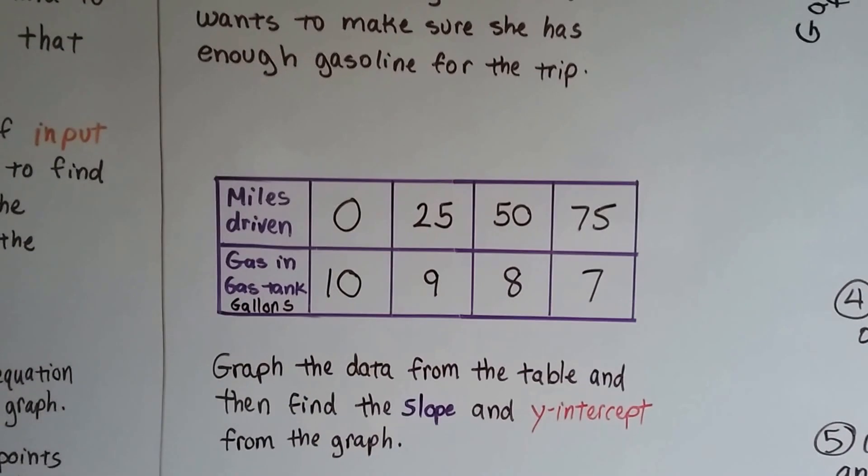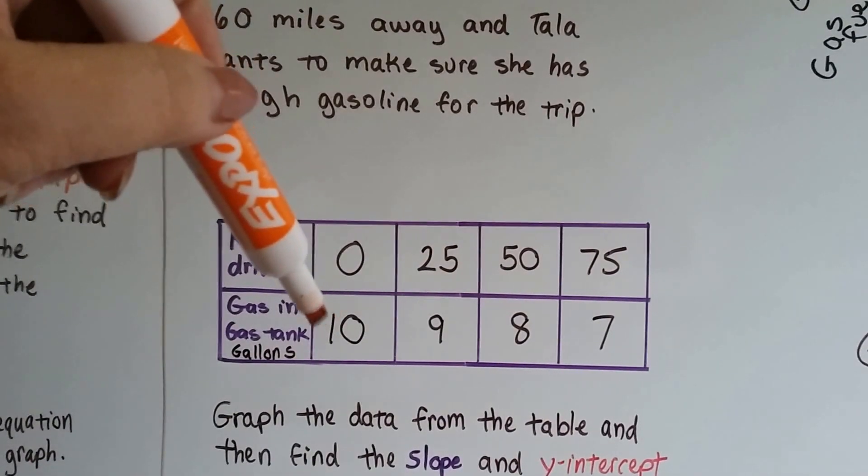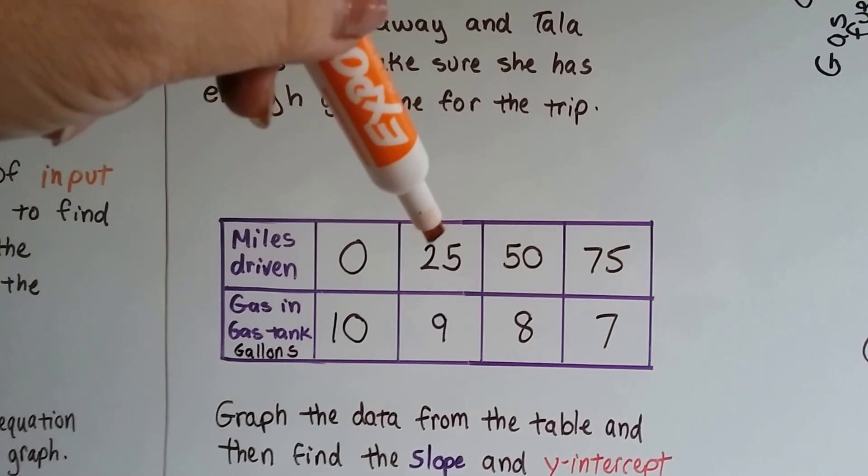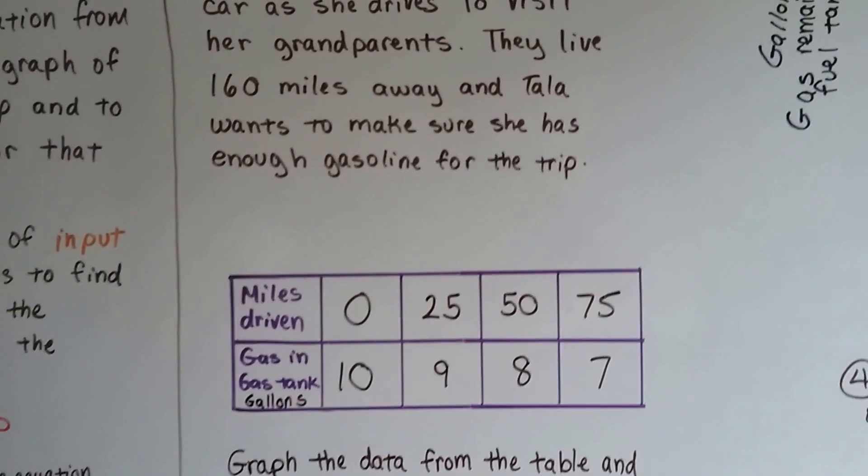As you can see from this table, once she's got 10 gallons of gas in her tank, once she drives 25 miles, she's only going to have 9 gallons left. And her trip is 160 miles.